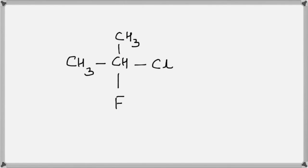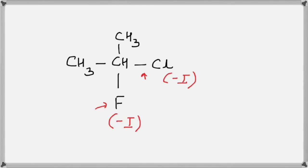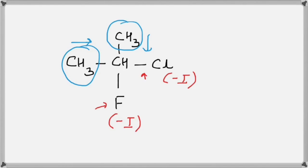Let's apply what we learned. Starting with the carbon-chlorine bond, chlorine attracts electrons and shows minus I effect. Similarly, fluorine is more electronegative than carbon, so it attracts electrons and shows minus I effect. The CH3 groups on the other side will supply electrons to the carbon and show plus I effect. That is how you decide the minus I or plus I effect: withdraw electrons — minus I; supply electrons — plus I.